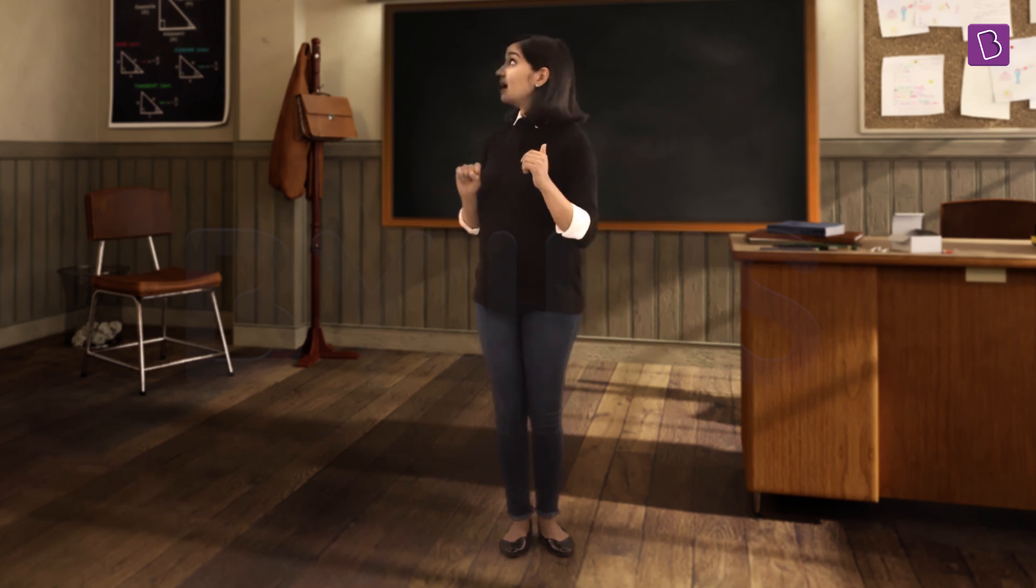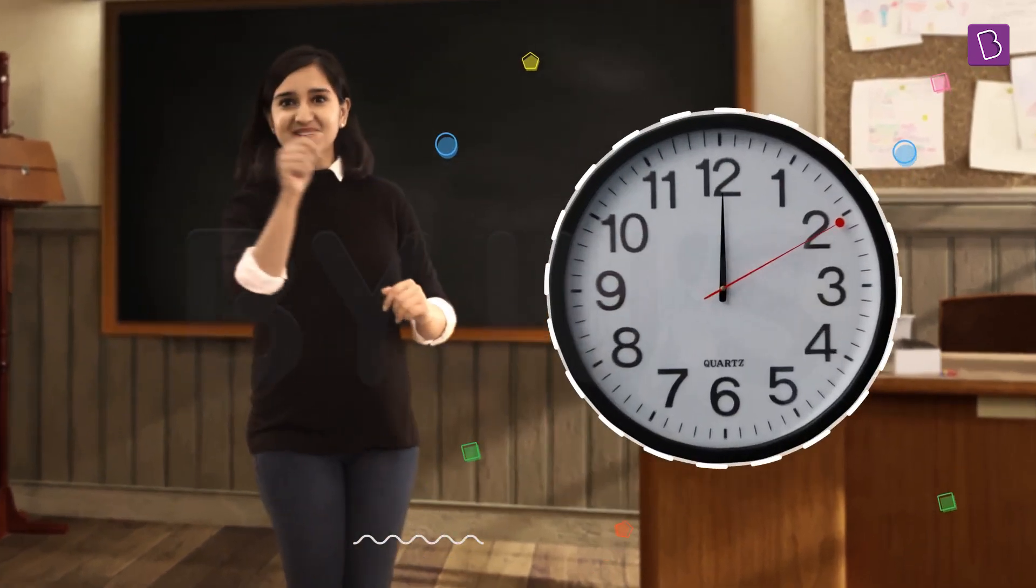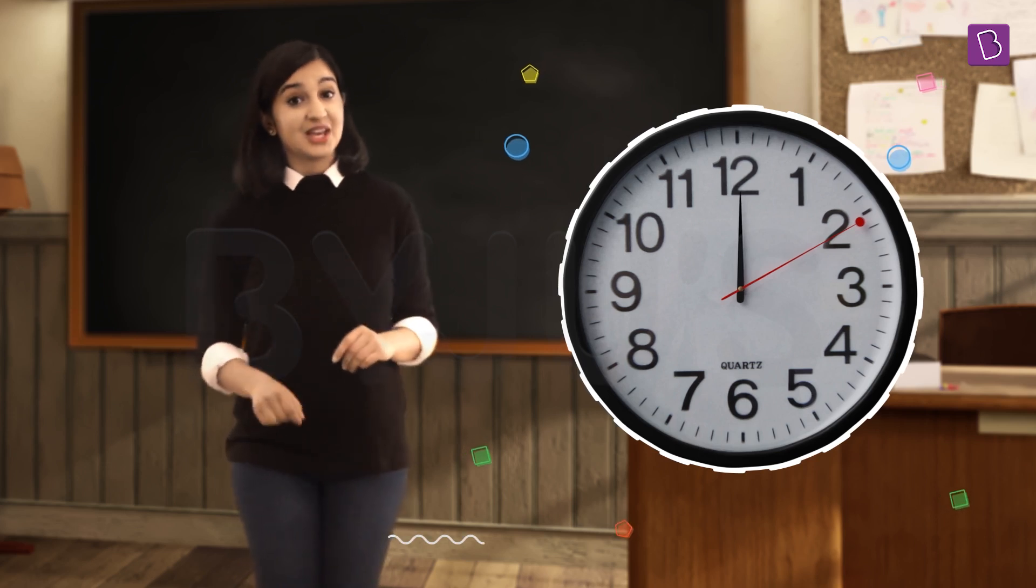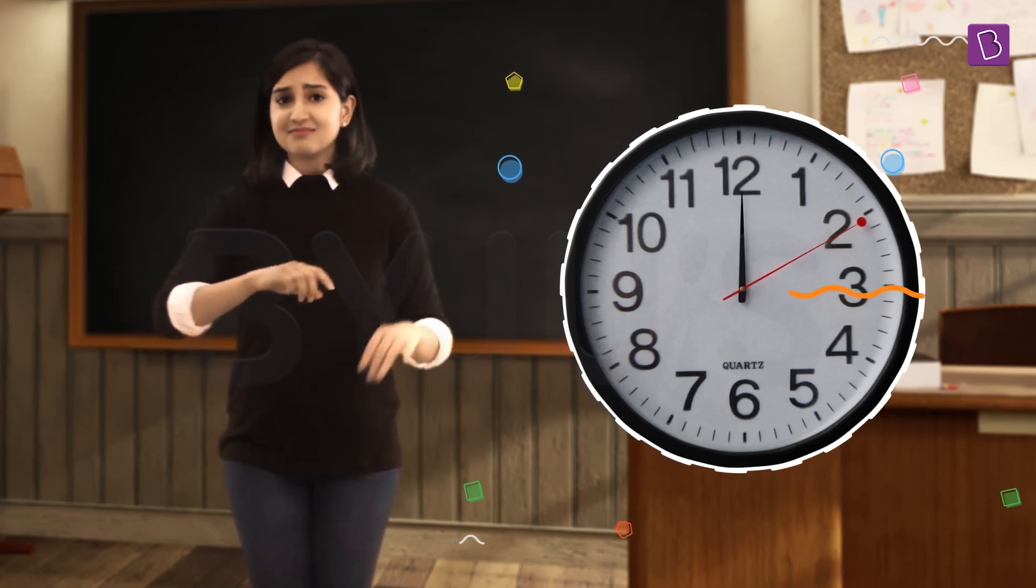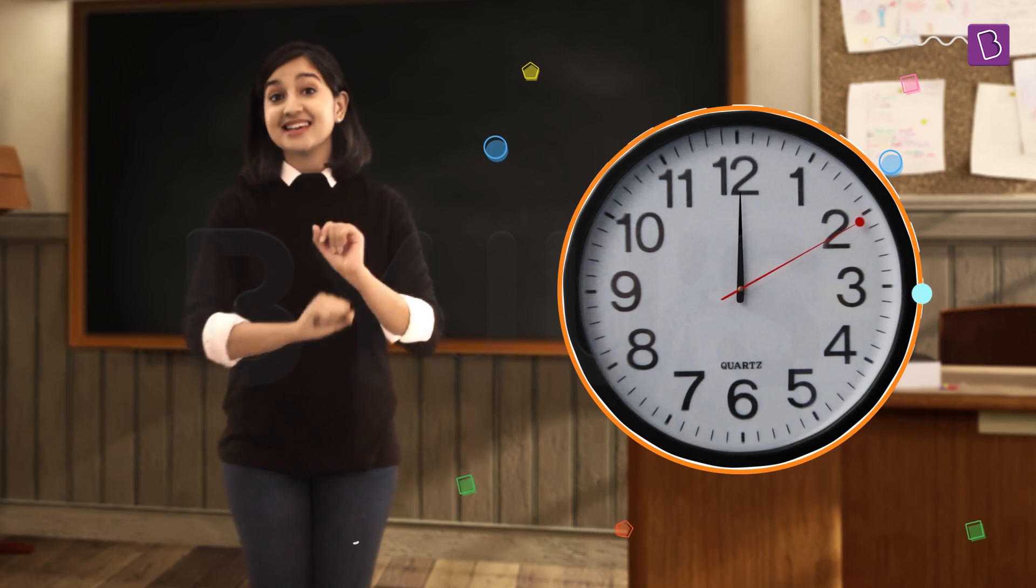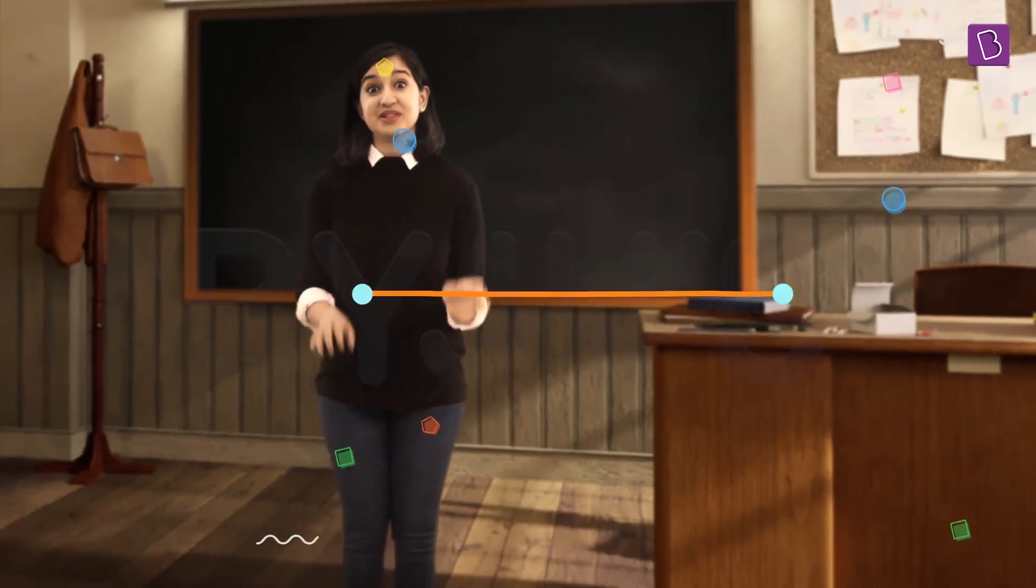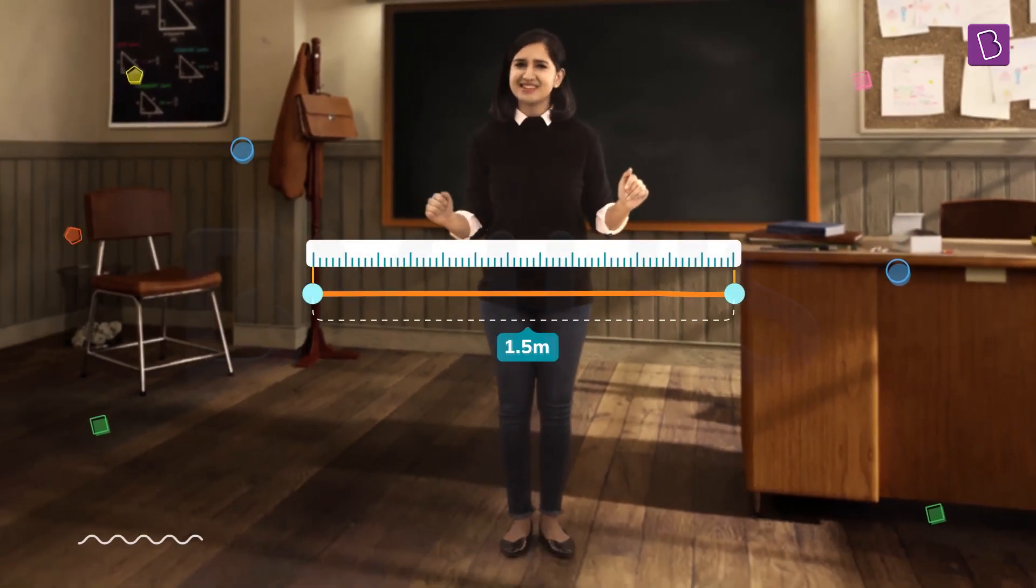And what if I ask you to measure the circumference of, let's say, a wall clock? Well, you might reach for a string to trace around the clock, then measure the distance between the points with a ruler. Easy.